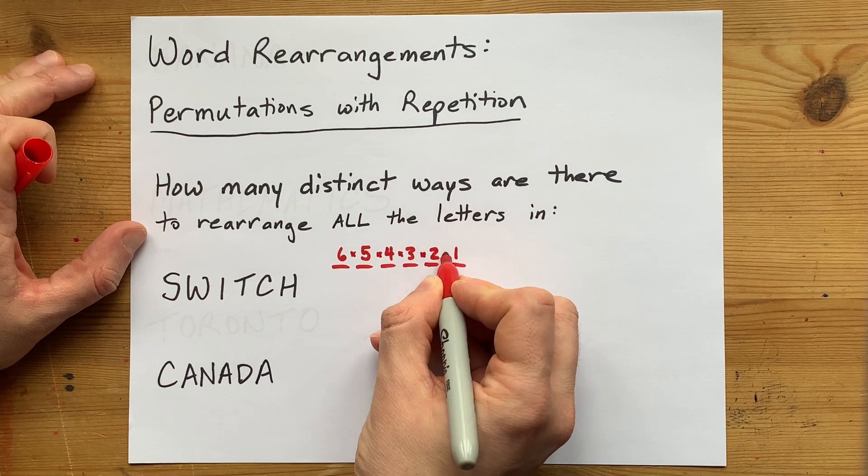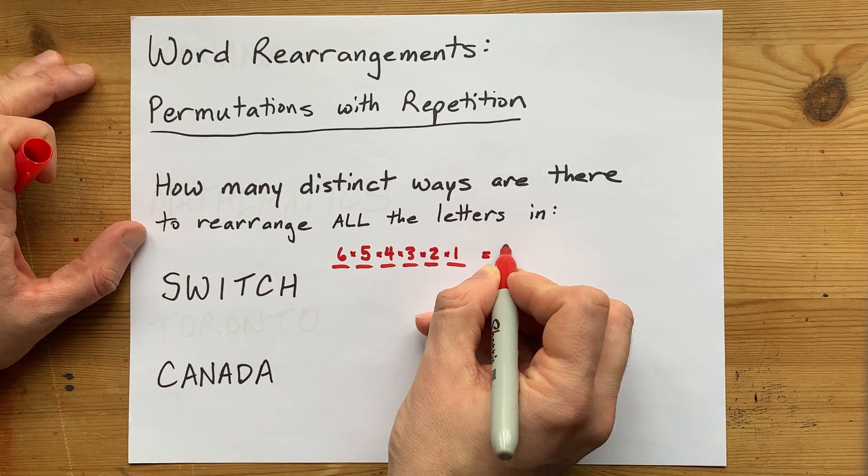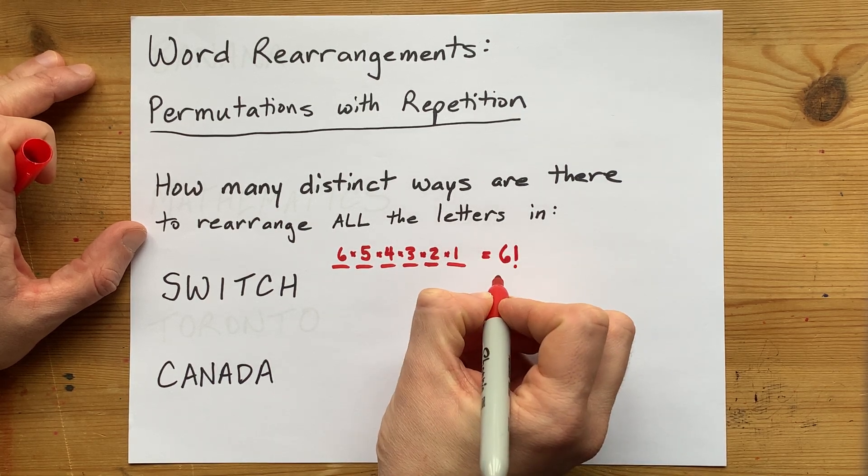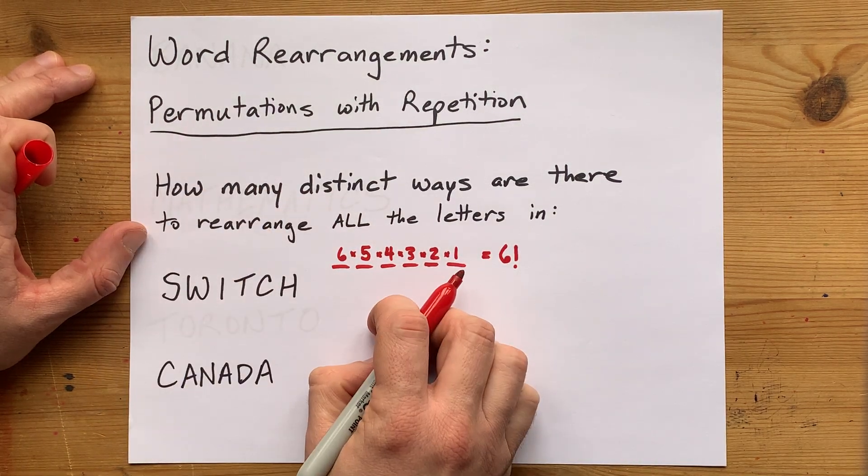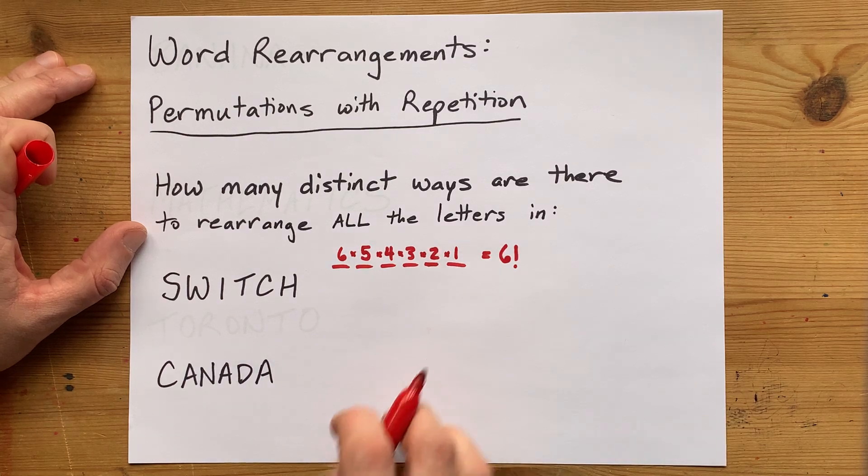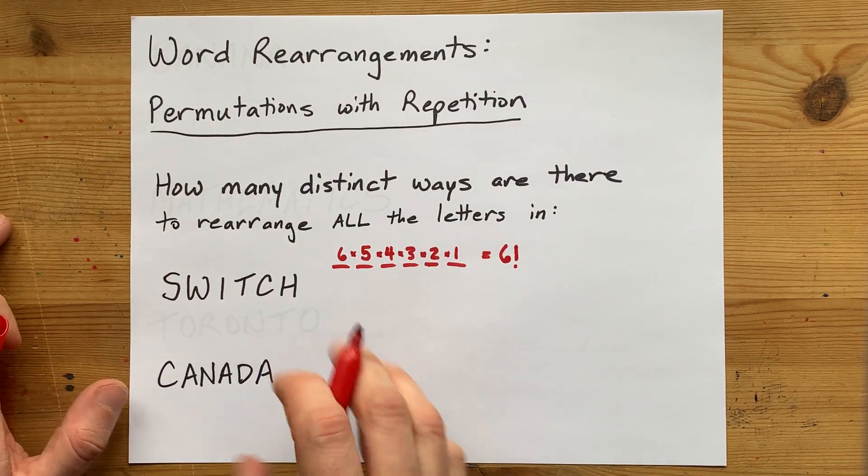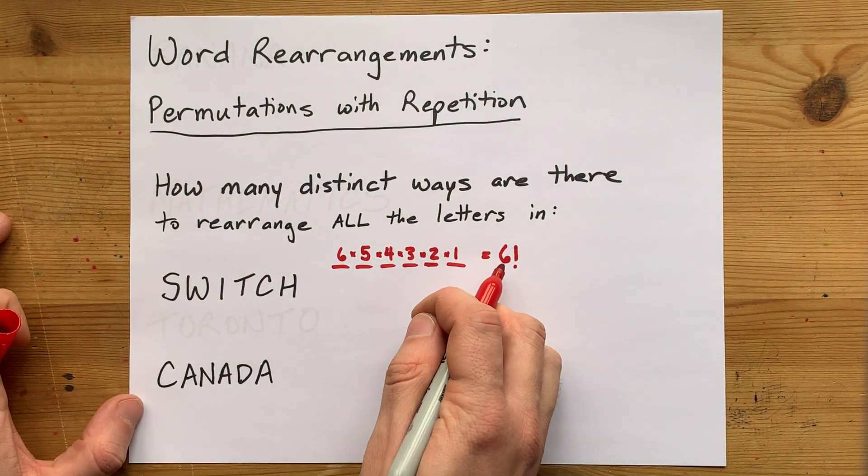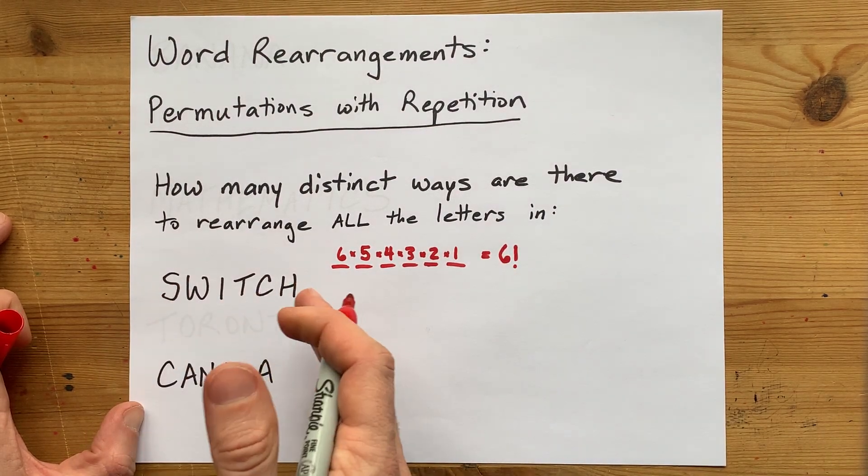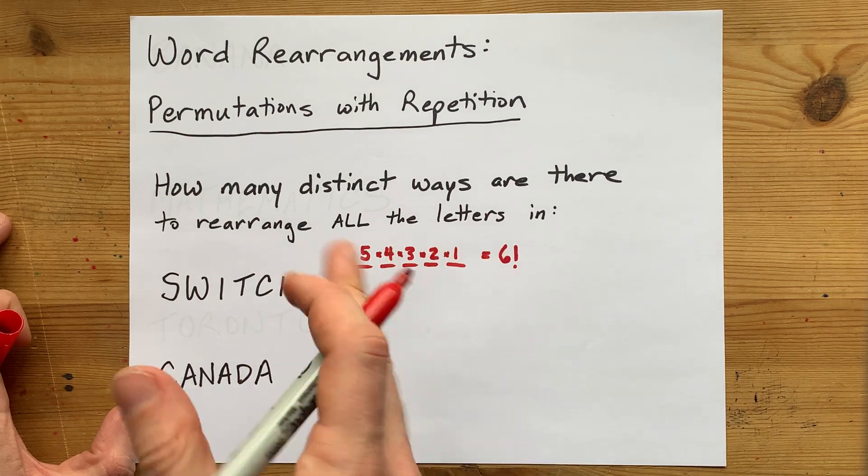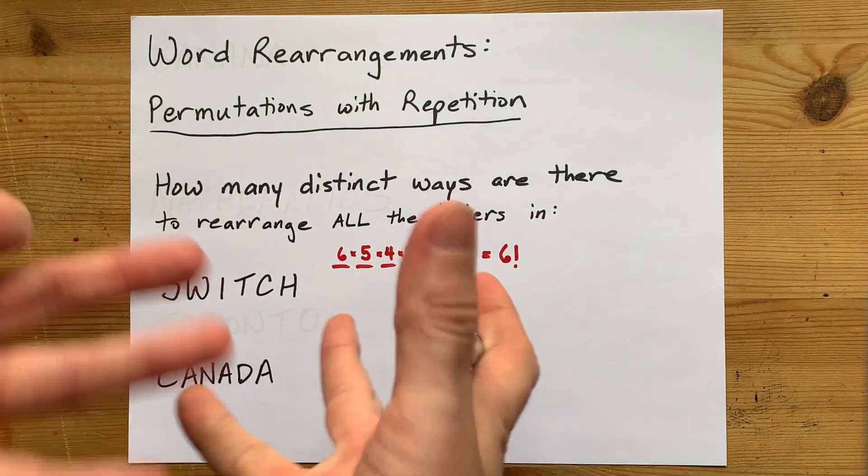This is fundamental counting principle. When you multiply them all together, you end up with six factorial. Some people will call that 6P6, or a permutation of six items when you have six to choose from. But a factorial, six factorial or n factorial, when you're rearranging n distinct items, is simply the number of distinct ways you can do that.